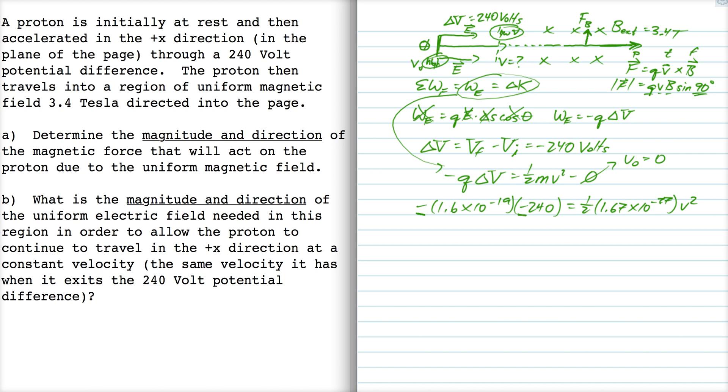If I solve this for v squared, I get v squared is 4.6 times 10 to the 10th. Therefore, v is 2.14 times 10 to the 5th meters per second.